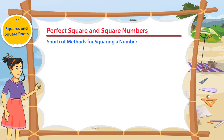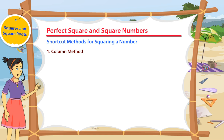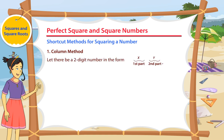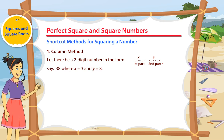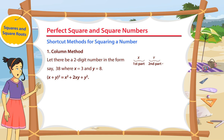Shortcut Methods for Squaring a Number. Now let's try to learn a few shortcut methods for squaring a number. Column Method is used only for two-digit numbers. Let there be a two-digit number in the form of x (first part) and y (second part). Say, 38, where x is equal to 3 and y is equal to 8.